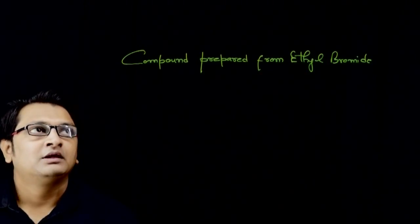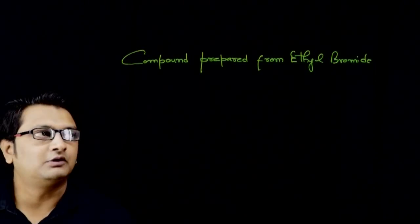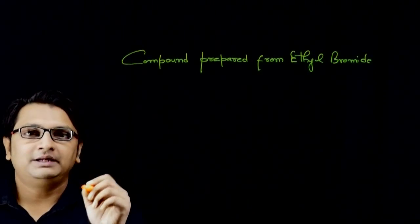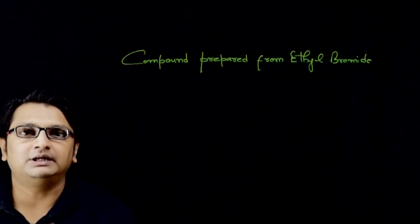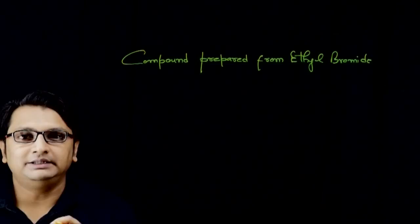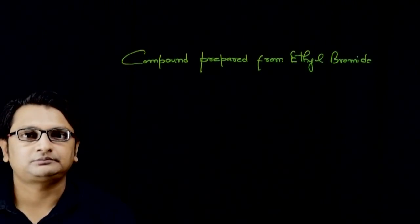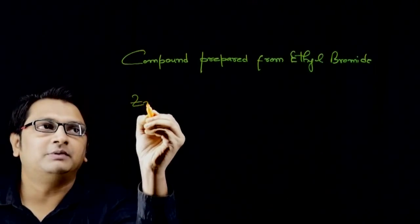Welcome back students. Here we have to tell which compound generally is prepared from ethyl bromide. By reducing ethyl bromide with nascent hydrogen atom, we form ethane gas as our required compound.